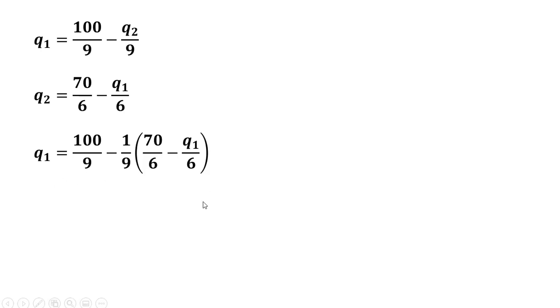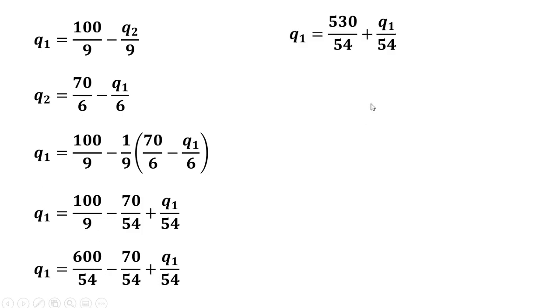So simplifying this a little bit, simplifying some more. I'm going to get a common like denominator here. Simplifying some more, and now multiplying through by 54. Subtracting this Q subscript 1 from both sides and dividing through by 53.